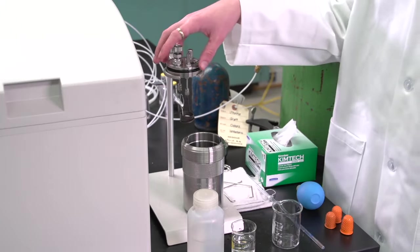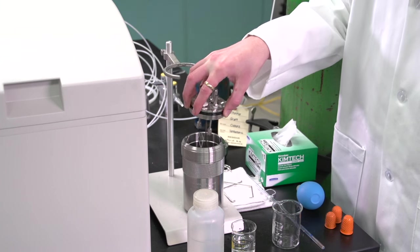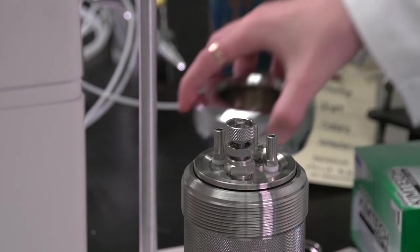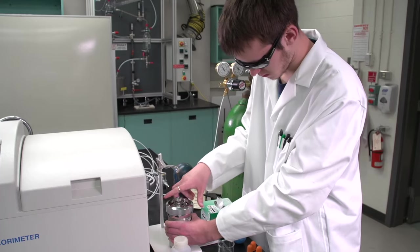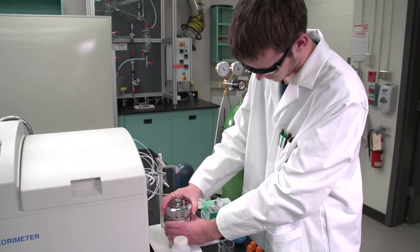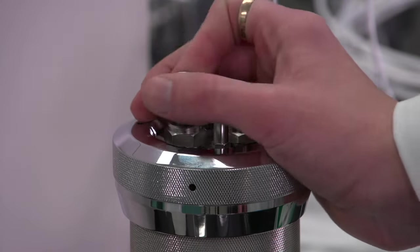Make sure that the gas valve is in the open position and place the bomb head into the bomb cylinder. Push it down as far as possible without jostling the sample. Place the screw cap onto the cylinder and tighten it by hand until it reaches the stop. Close the gas outlet valve on the bomb head.